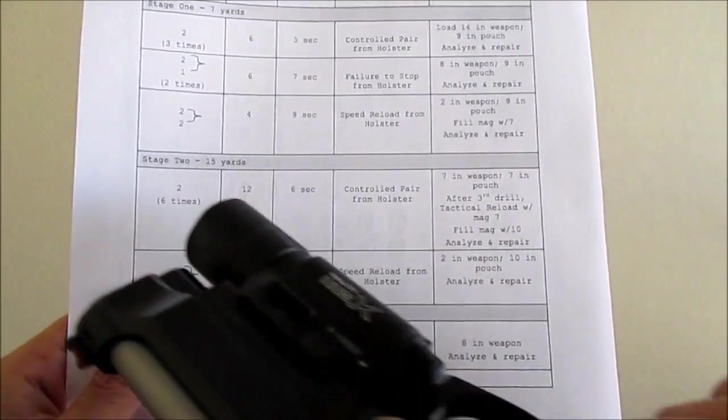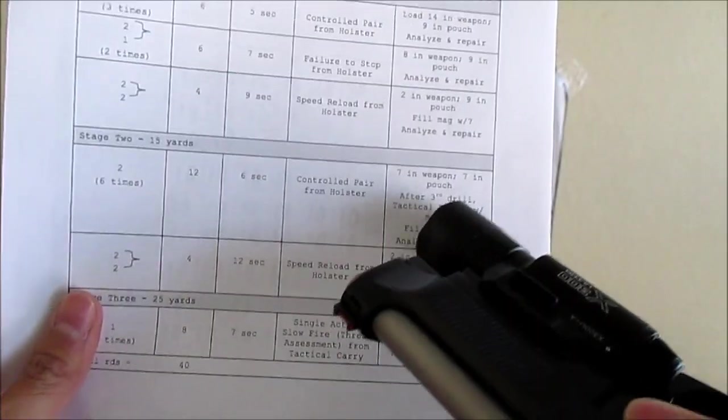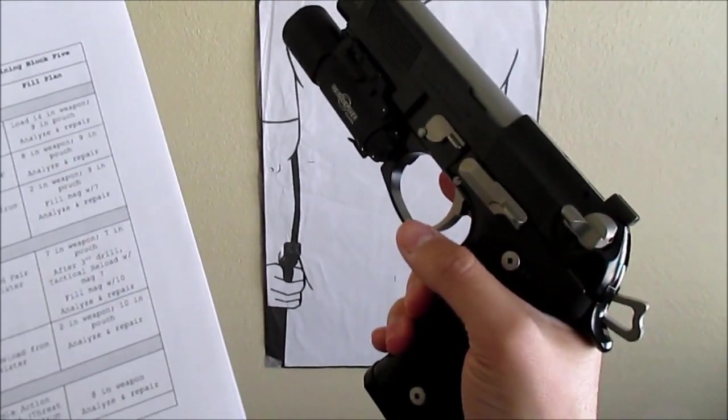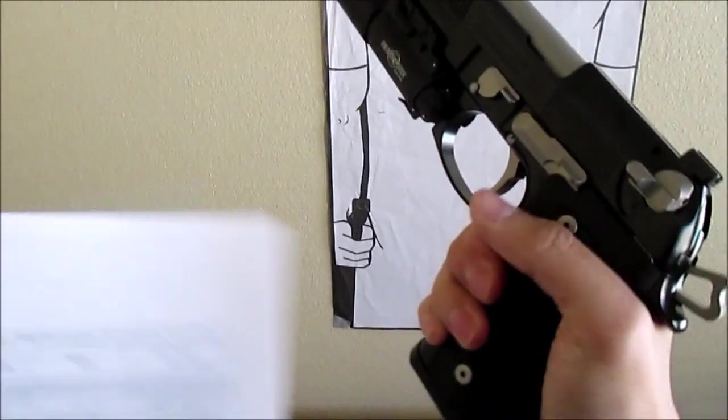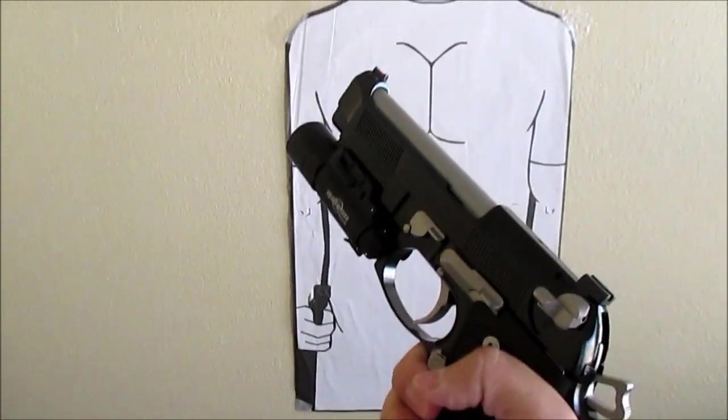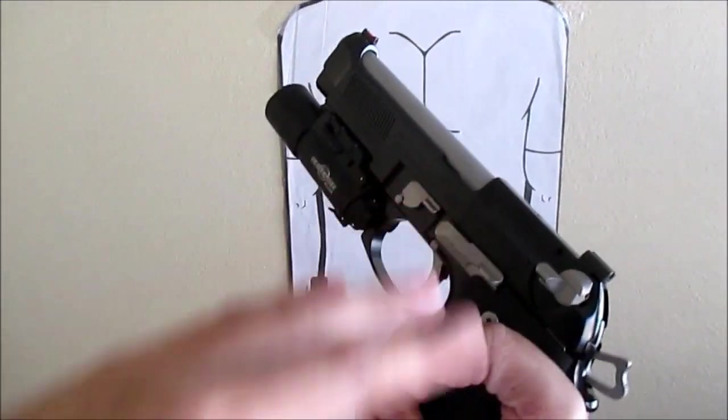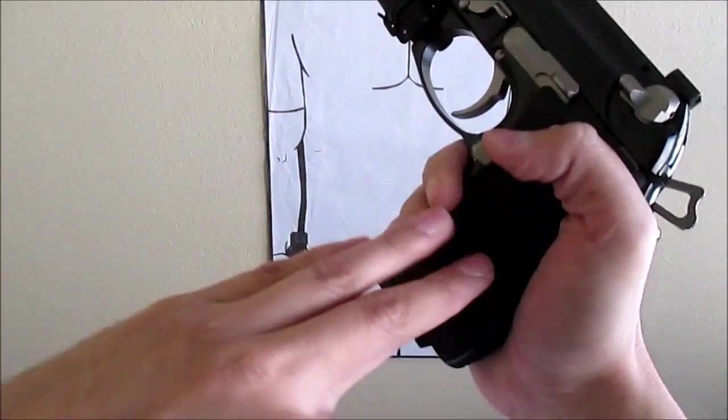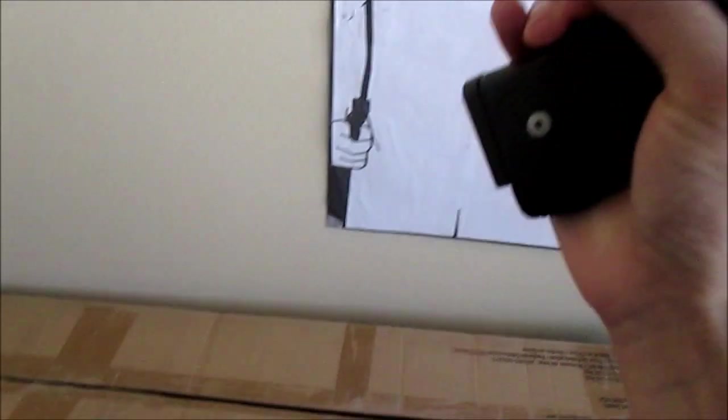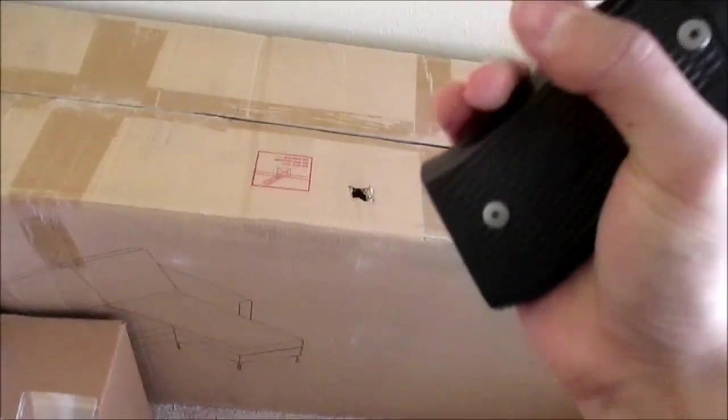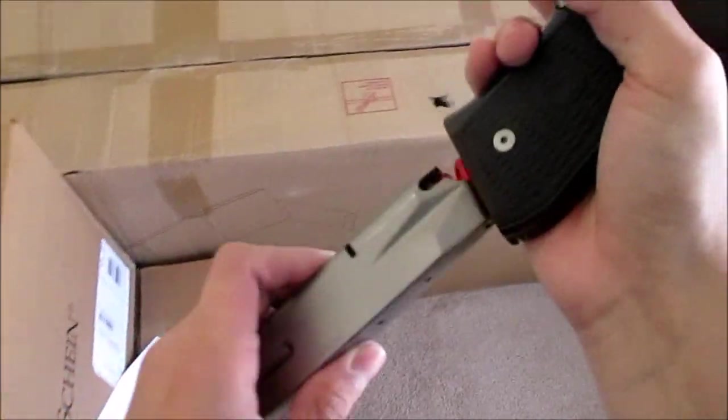So I just want to remind you that at the 15 yard line, after the third drill, you have to do a tactical reload. And that means you'll still have one in the chamber, but your magazine will be empty. So your magazine, your slide will not come back, lock backward, because you'll still have one in the chamber. And so you'll have to remember, okay, my magazine is empty. So I have to, even though the slide is not back, I have to drop it. And I have to, you know, put in my full mag.